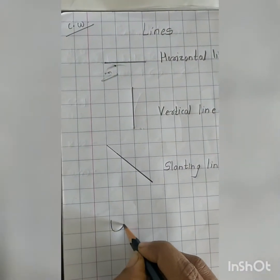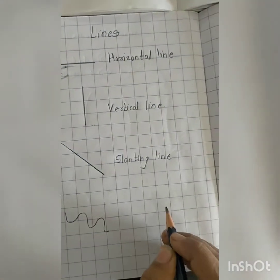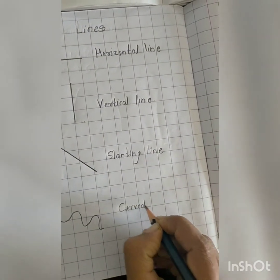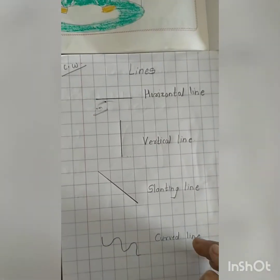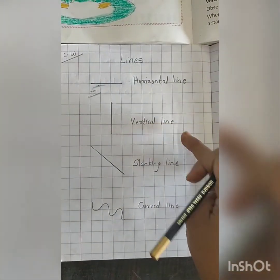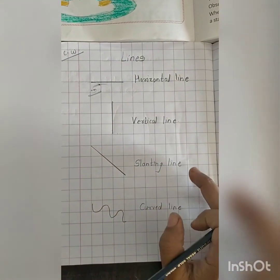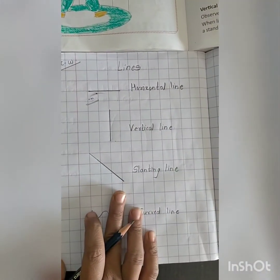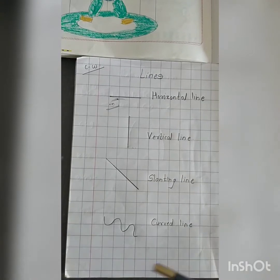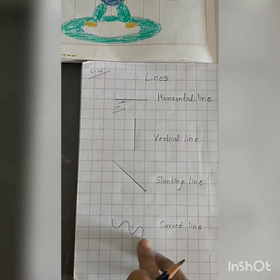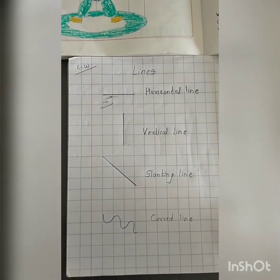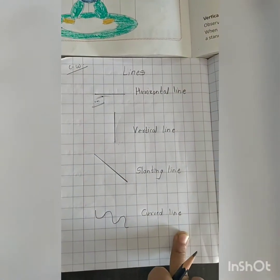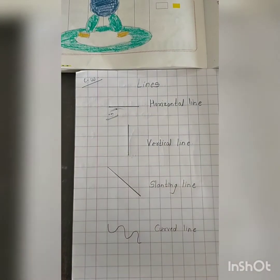And अब हम निकालेंगे curve line — जो मुड़ती है. Curve line. So students, यह जो horizontal line, vertical line, slanting lines हैं — वो straight lines के parts हैं, मतलब straight lines हैं. And curve line — हमें पता है, जो मुड़ती है. आज आपको notebook में यह lines निकालनी हैं, उनके spellings लिखने हैं, साथ में spellings learn भी करने हैं.